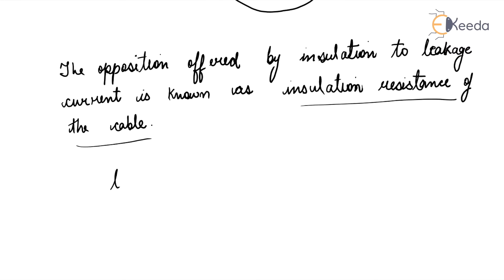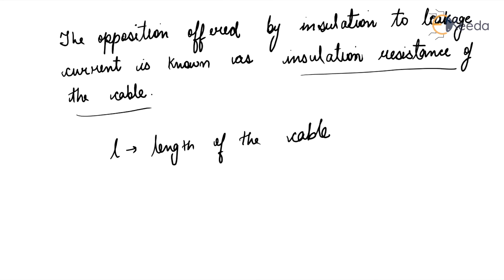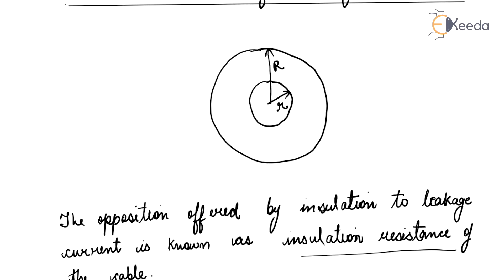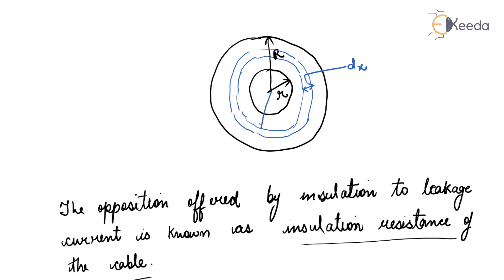L is the length of the cable. Consider a small layer of insulation of thickness dx. This is thickness dx at radius x.